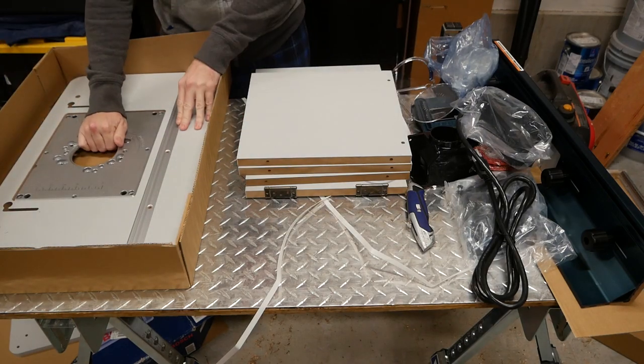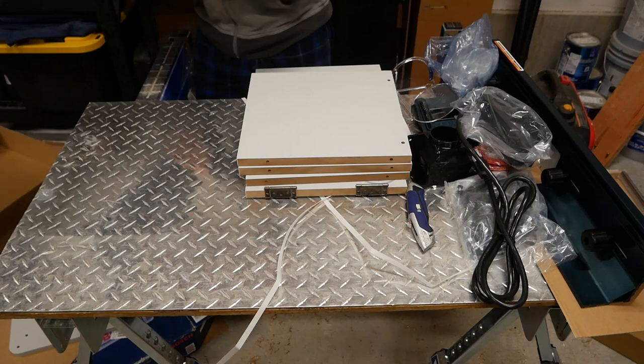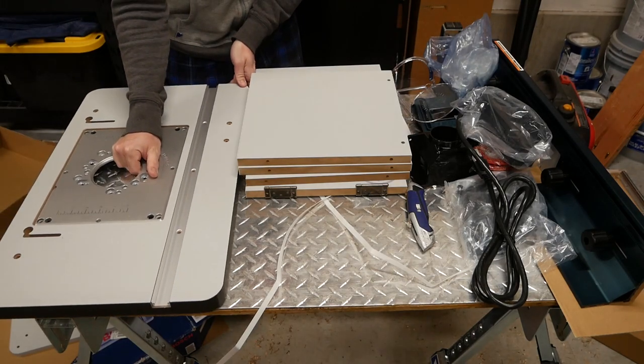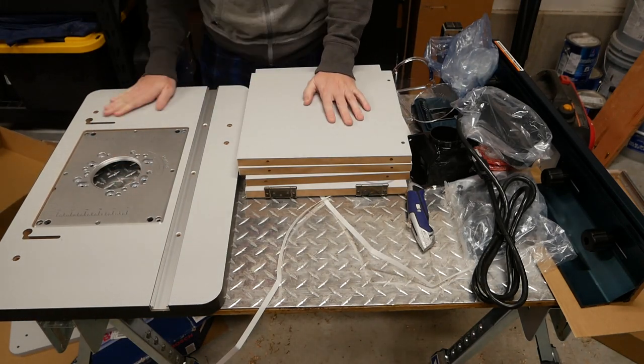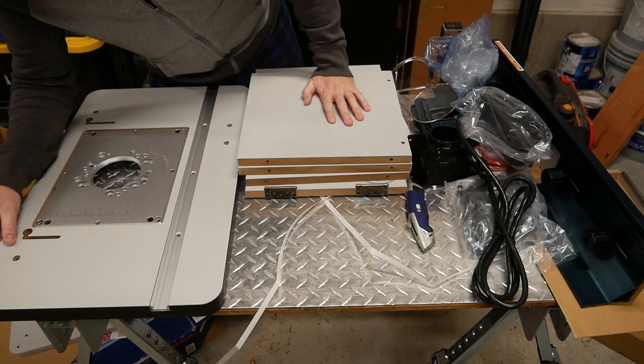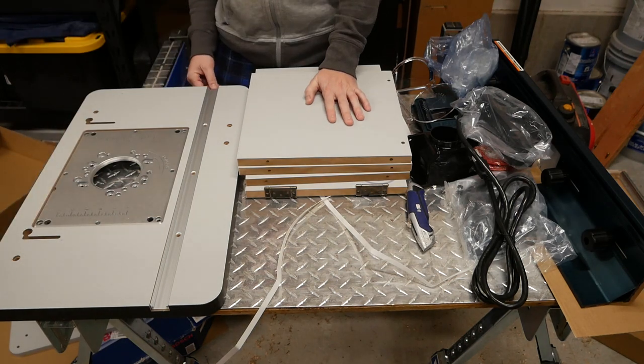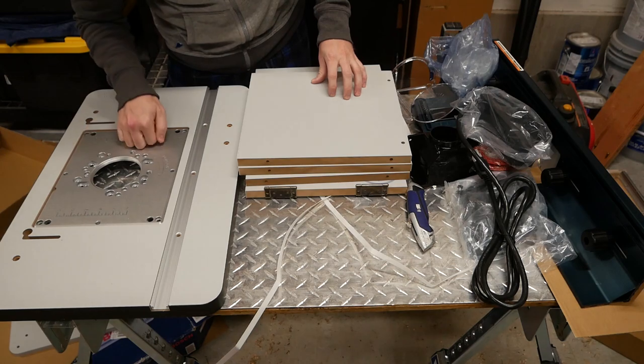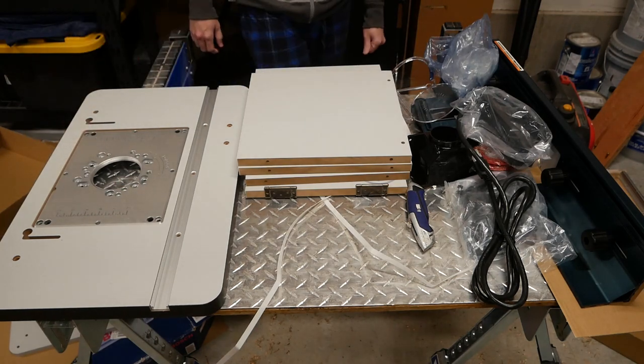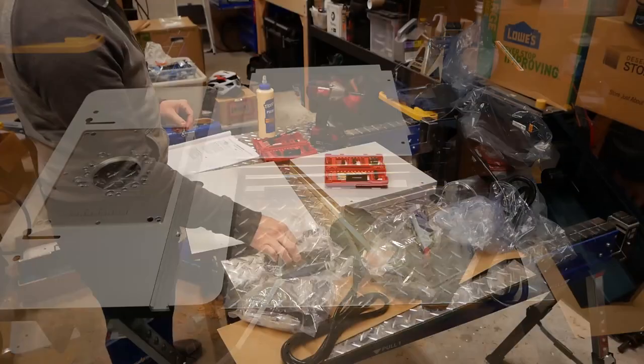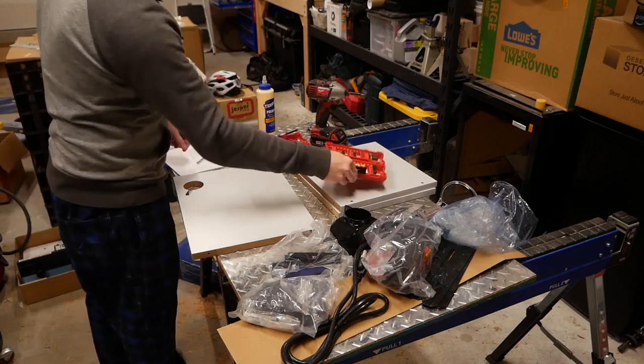Our final item out of the box is the tabletop itself with the router mounting plate pre-installed. The miter track is set loose in its dado. I found this out the hard way when I went to move it off camera and it slid right out. No damage done, but be careful. With everything out of the box, it's onto some late night assembly action.